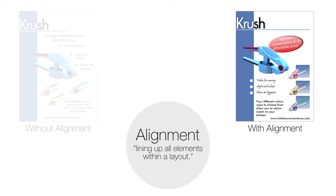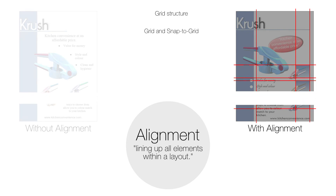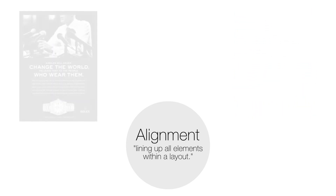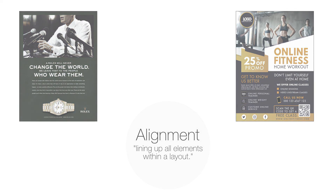Alignment is often created by using a grid structure to a layout. A designer can choose their own grid structure within a layout. Most ATP software will have grid structure and alignment tools including grid and snap to grid options. Alignment is an essential principle for any effective layout.